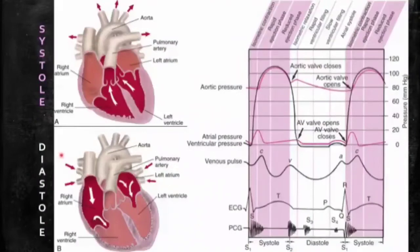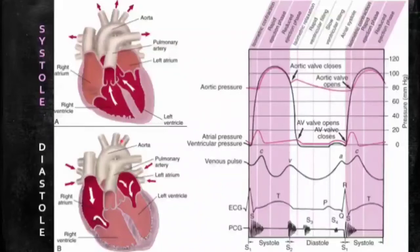The heart contracts and relaxes rhythmically, creating a two-phasic cardiac cycle: systole and diastole. During systole, the ventricles contract, injecting blood from the left ventricle into the aorta and simultaneously from the right ventricle into the pulmonary artery. During diastole, the ventricles dilate, drawing blood into the ventricles as the atria contract, moving blood from the atria to the ventricles.